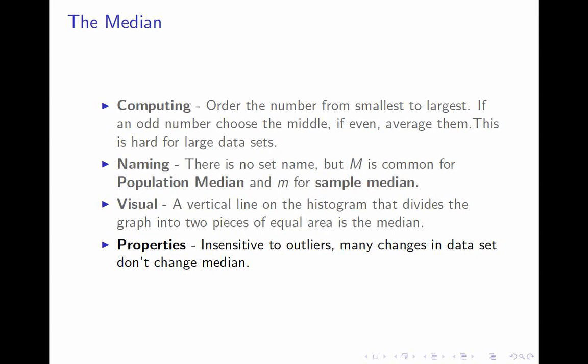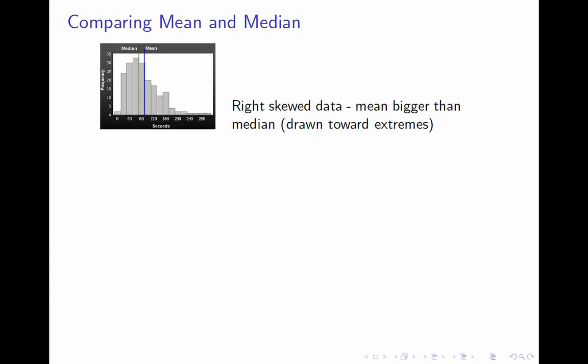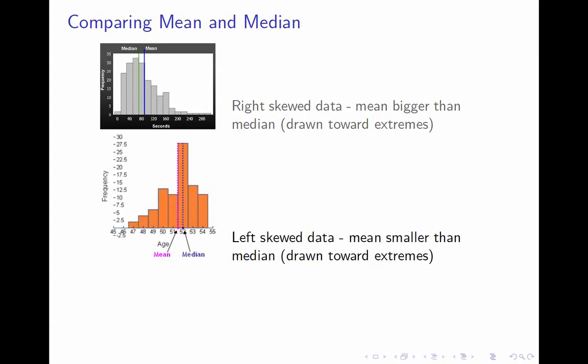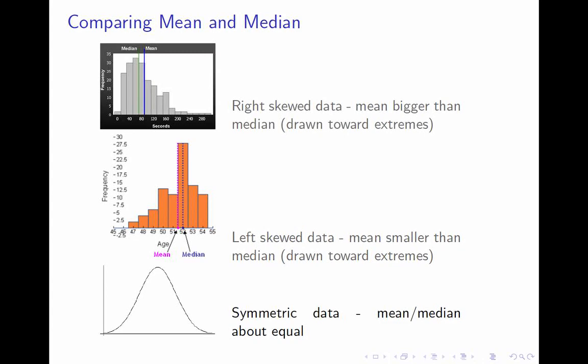The median is not sensitive to outliers. In fact, many changes to a data set won't affect the median at all. On a right-skewed histogram, the mean is pulled toward the long right tail and sits above the median, while the median stays central to the main clump of data. In left-skewed data, the mean is smaller than the median. In symmetric data, both mean and median are in the middle — close to the mode as well.